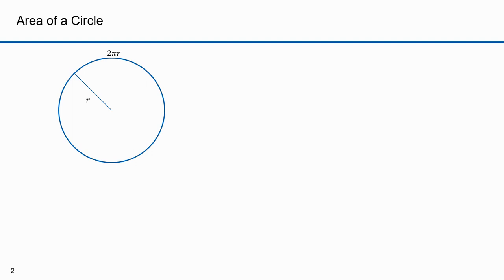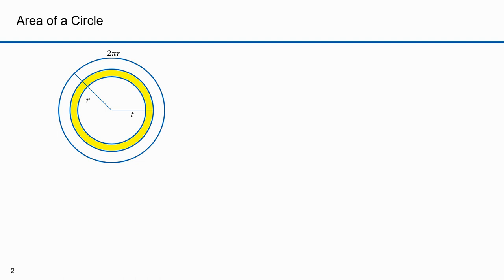Here's the circle with radius r. The circumference of the circle is 2πr. I'll create an inner band called a shell, where the outer radius is t. The circumference of the outer radius is 2πt, and the width of the shell is dt, meaning the width is infinitesimally small. The area of this yellow band is approximately 2πt times dt, which isn't exact because the inner radius is smaller. However, if I take the limit as dt approaches 0, then 2πt·dt approaches the area of this infinitesimally small band.